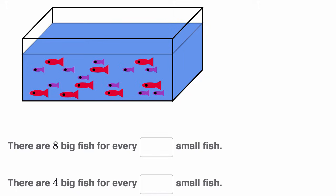Let's count the big fish first. Counting them up, there are eight big fish in this tank. Now counting the small fish, there are ten small fish. So in the tank, for every eight big fish — shown in red — there are ten small fish.